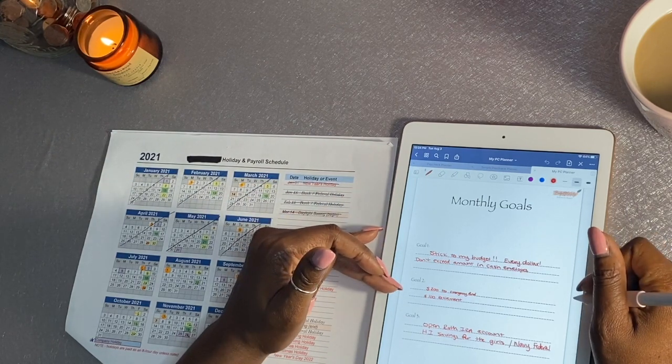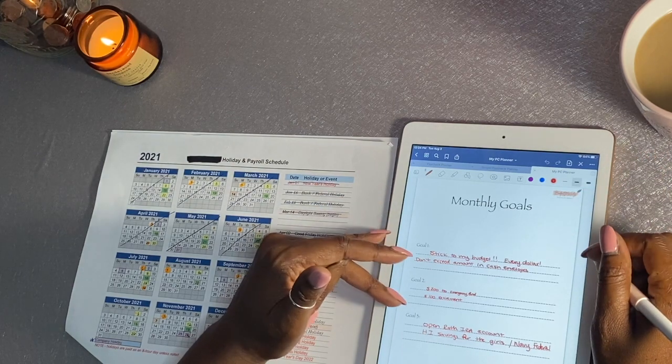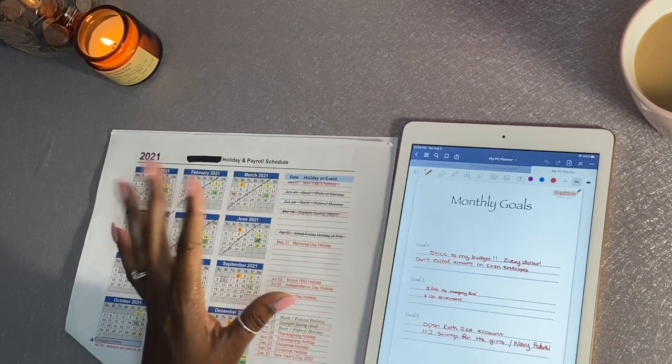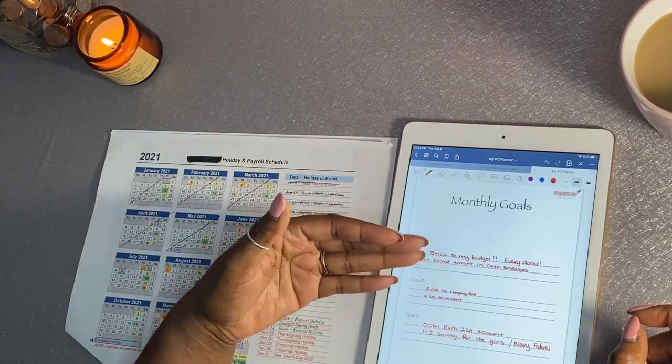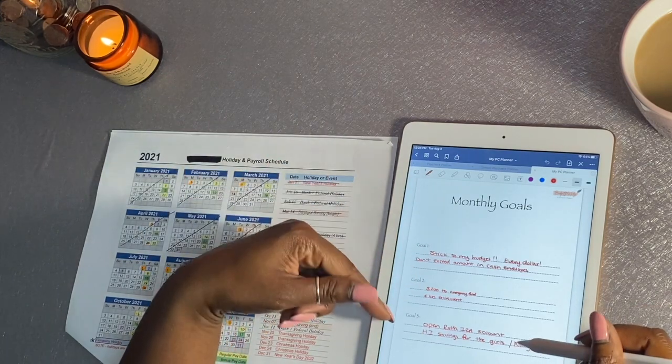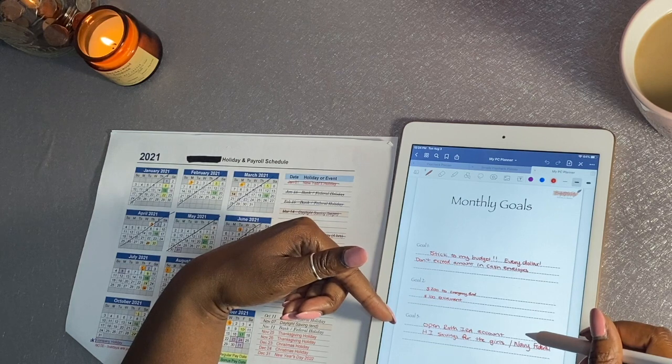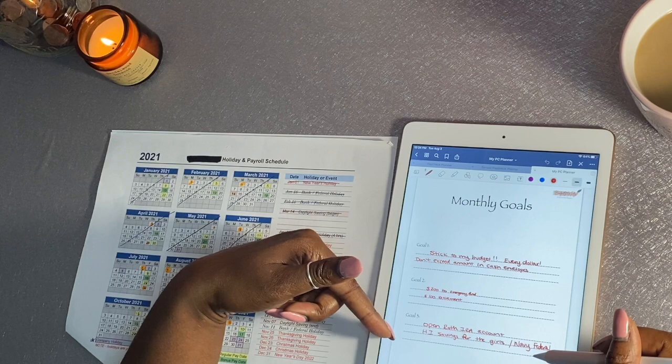I do want to put aside for the whole month $200 in emergency fund and $100 towards retirement. So that's just for the whole entire month. If I go over that that's wonderful, but the goal for this month is to put away $200 extra in emergency cash and $100 in retirement. And then goal number three is open a Roth IRA and a high interest savings account for my girls, probably with Navy Federal.